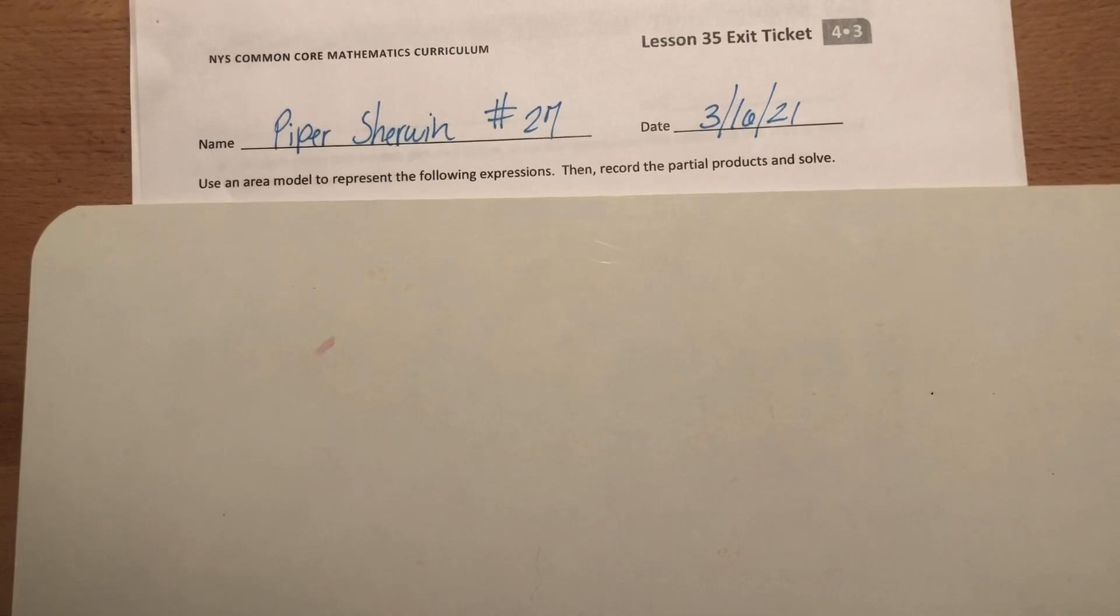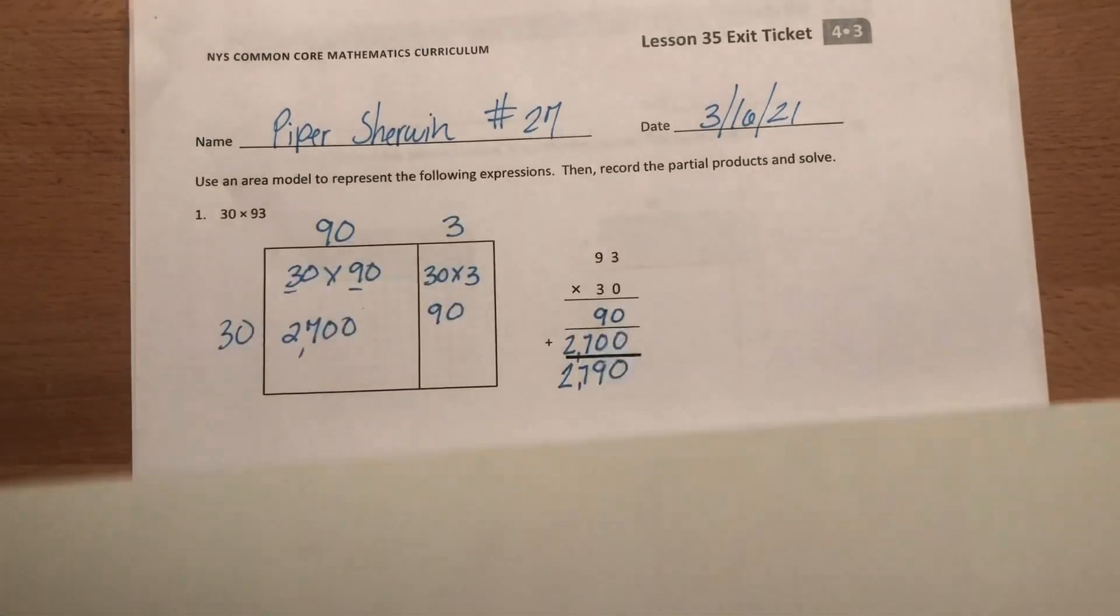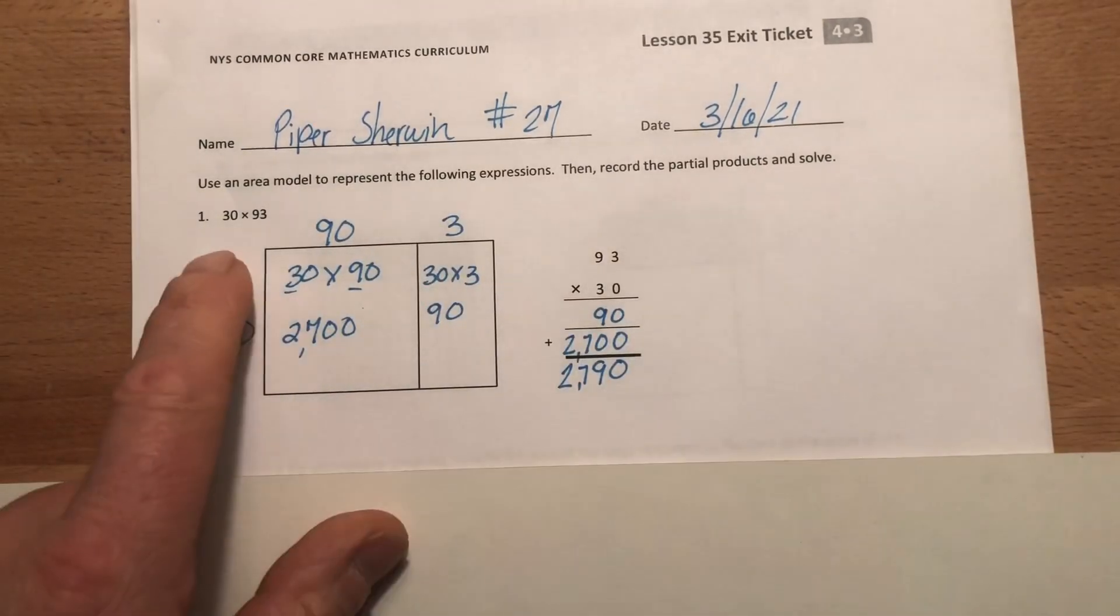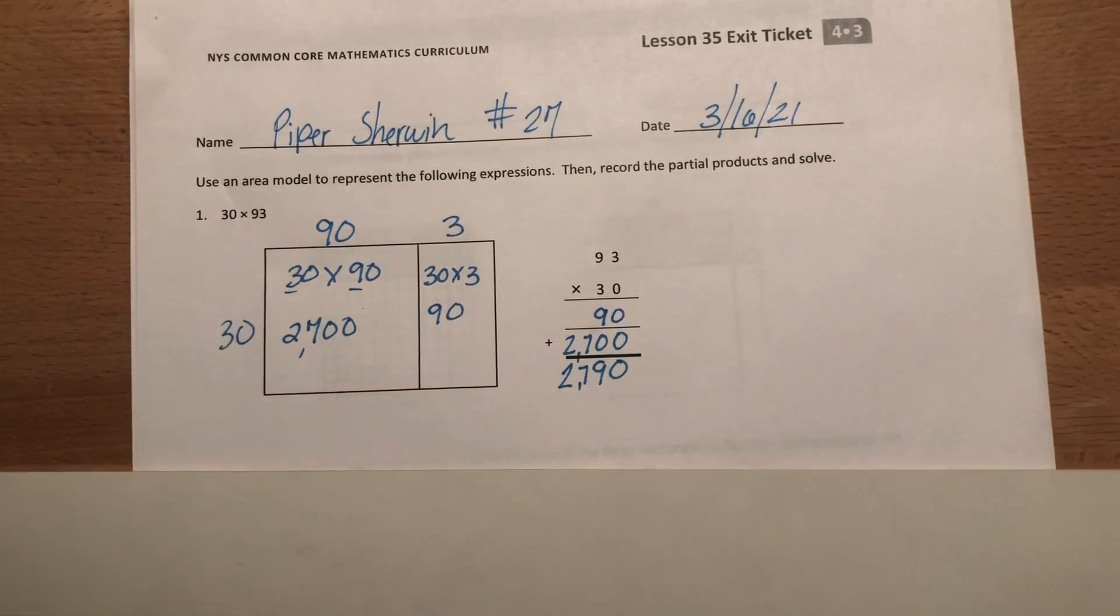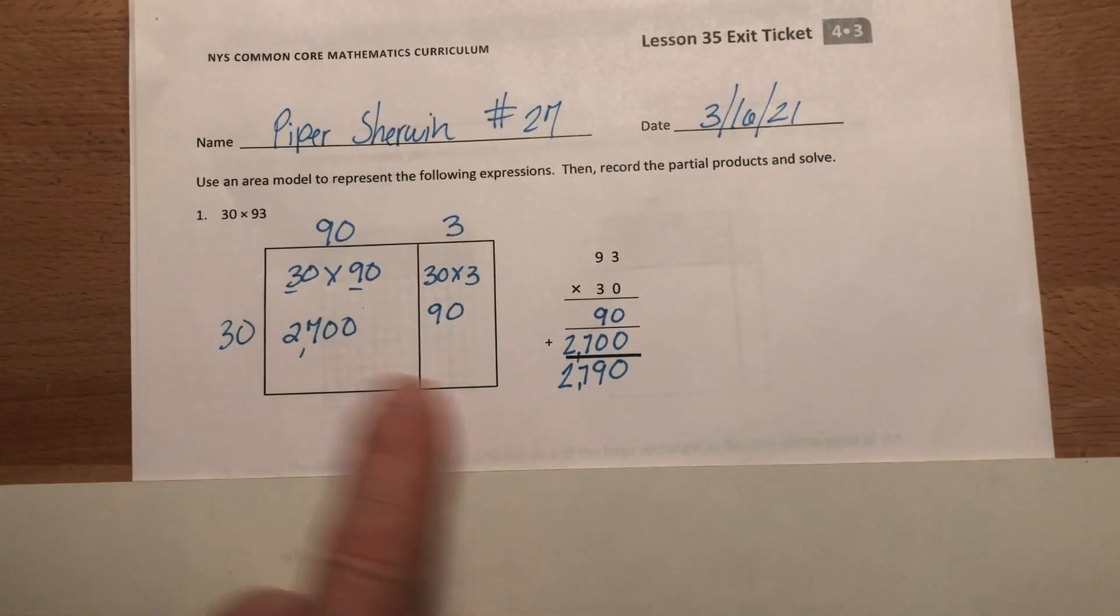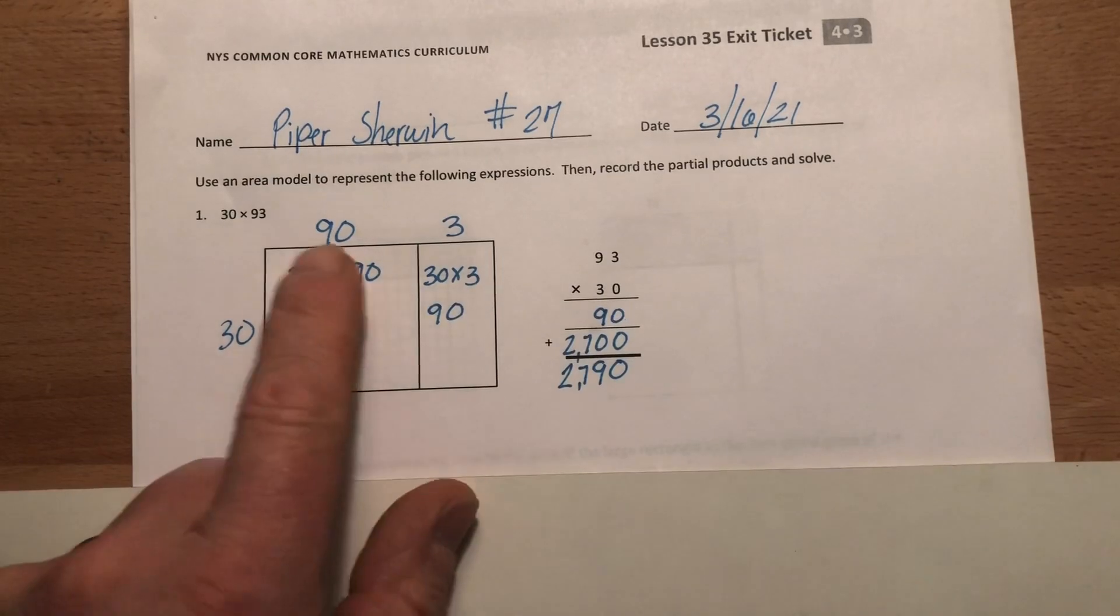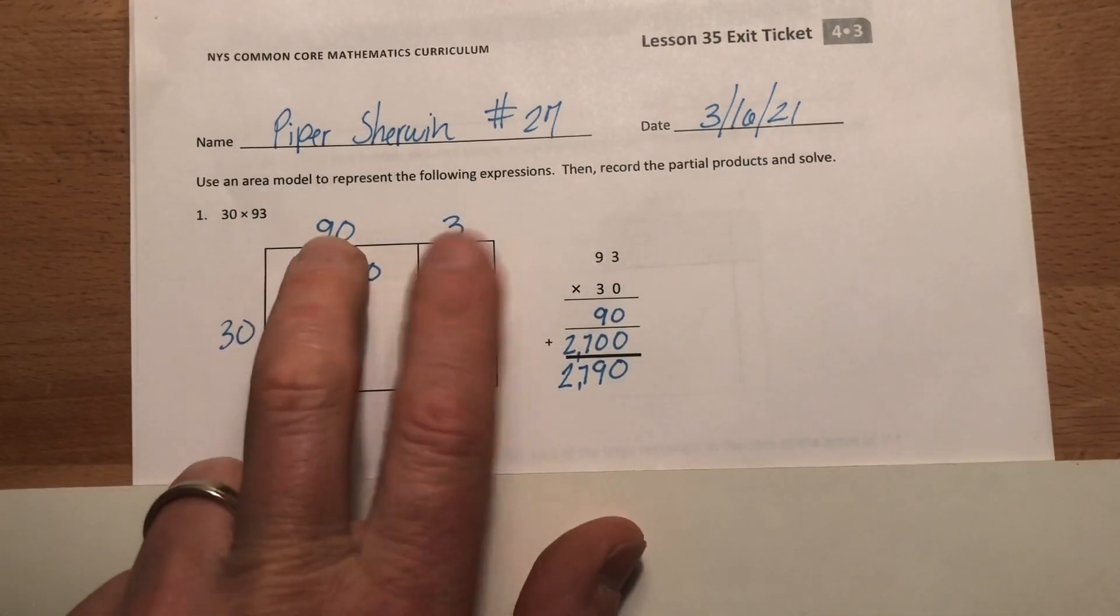All right, that's your five minutes. Let's see how you did. Here's the first one for you. 30 times 93. Okay, this is how it turns out. Remember, the 30 here goes on your rows, because 30 rows are 93. I took my 90 and split it into a 90 and a 3.